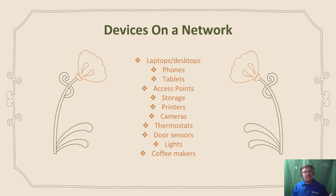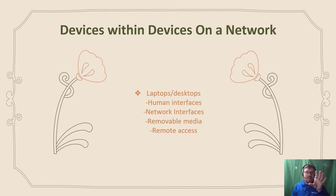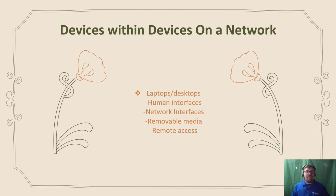There are also devices within devices on a network. Let's take a look at that laptop and desktop thing for a minute. We can have human interface devices — your keyboards and mice — and there were attacks that could be done via the hubs connecting those to a desktop or laptop. There could be network interfaces: if a computer is connected via both wireless and wired at the same time, there are multiple ways of access. It could be removable media, like a corrupted flash drive plugged into a laptop, or even remote access — both intentional, like coming through VPN, and unintentional, like a Trojan.